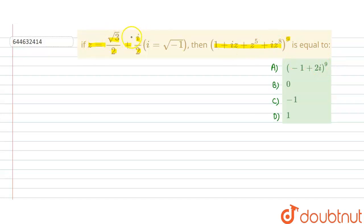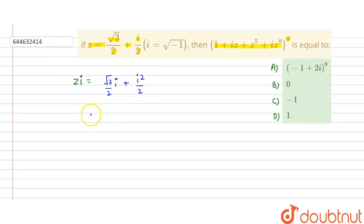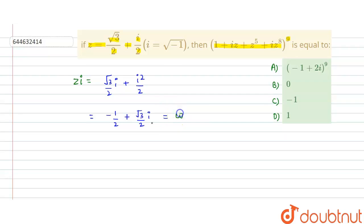First we need to examine z. z equals √3/2 + i/2, which looks like omega and omega square. If we multiply z by i, the value comes out to be √3/2 · i + i²/2. Simplifying, i²/2 = −1/2, so we get −1/2 + √3/2 · i. This equals omega. So the relation is: iz = ω.